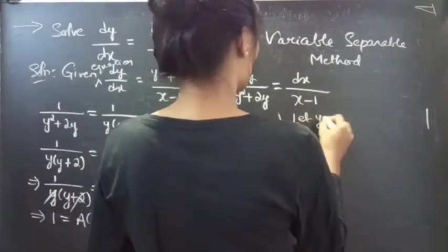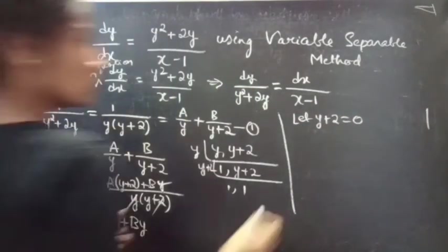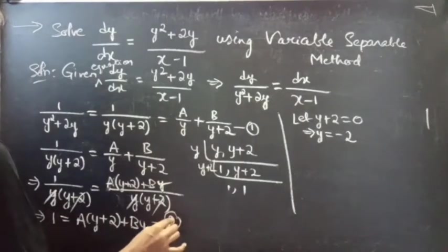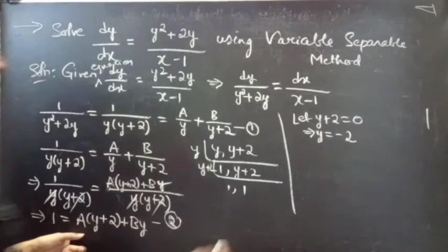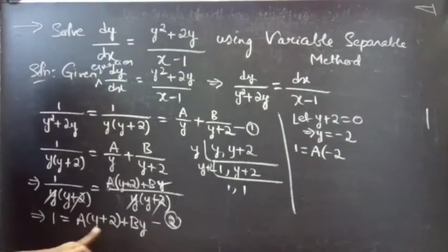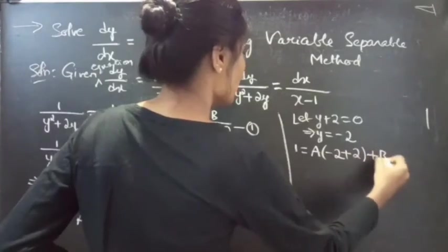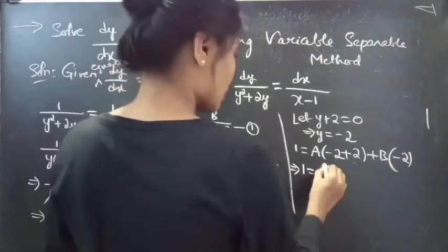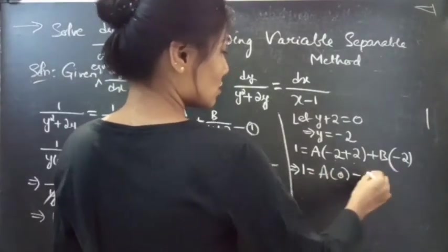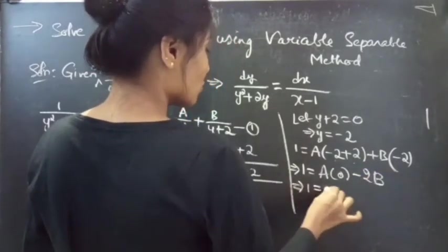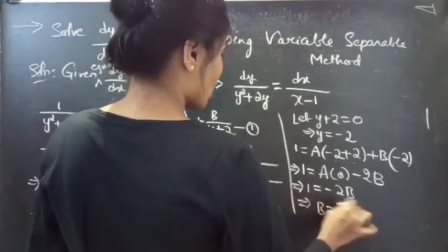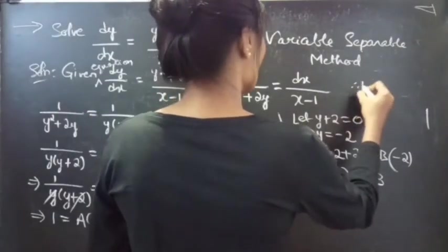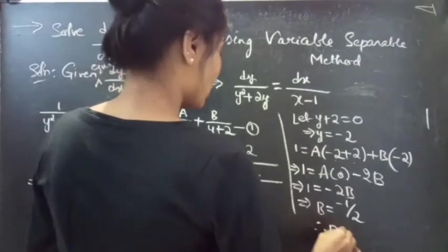Now let y + 2 = 0, so y = -2. Substitute y = -2 into equation (2): 1 = A(-2+2) + B(-2), giving 1 = A(0) + (-2B), so 1 = -2B. Therefore B = -1/2.